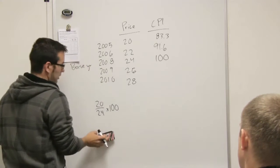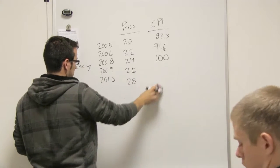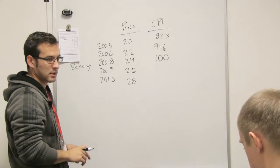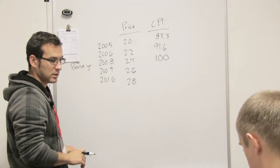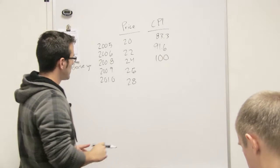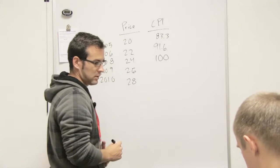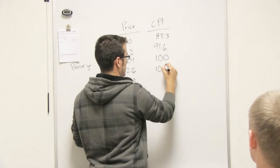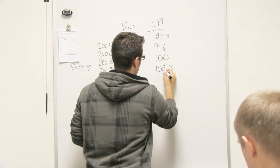But then yeah, so for these - so what would it be for this year, for 2009? If you're saying what's the CPI for 2009, 26 divided by 24 times 100, which is 108.3.